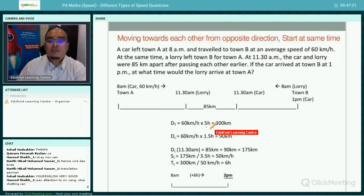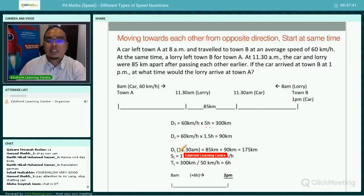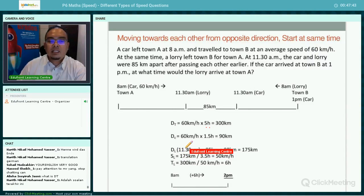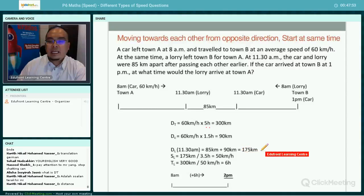For distance C, it will be 60 kilometers an hour multiply by 1.5, you get 90 kilometers. So the distance traveled by the lorry at 11:30 a.m. will be 85 kilometers plus 90 kilometers. You get 175 kilometers.